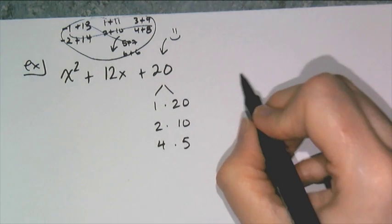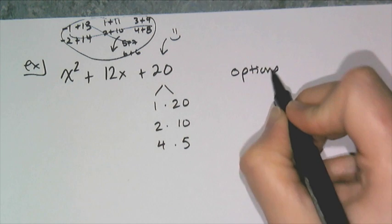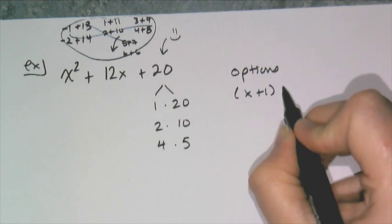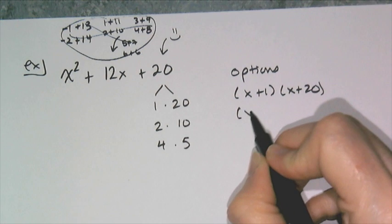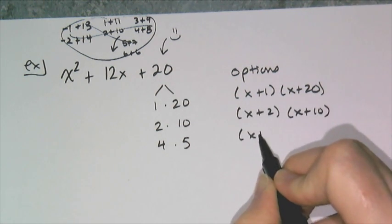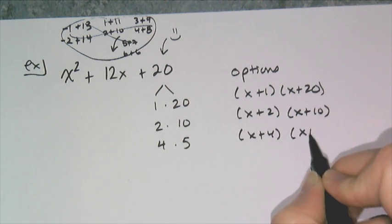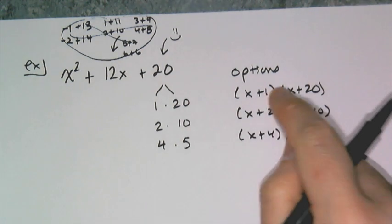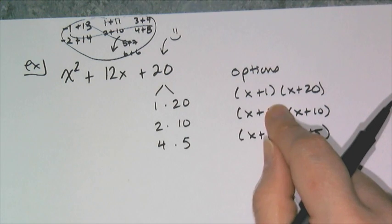So my options are gonna be x plus 1, x plus 20, x plus 2, x plus 10, or x plus 4, x plus 5. Only one of these combinations is gonna work.